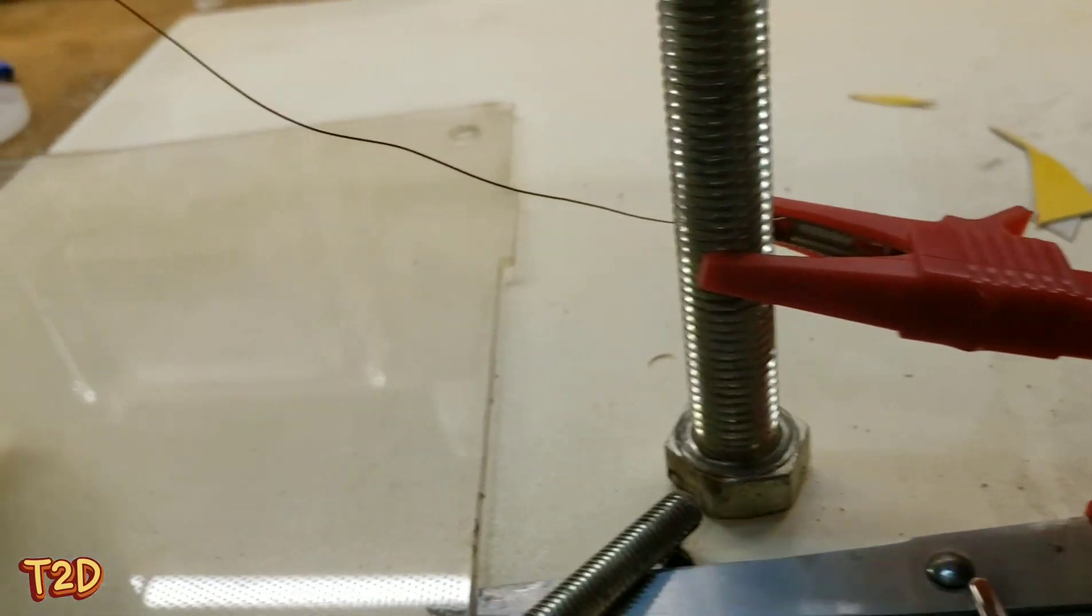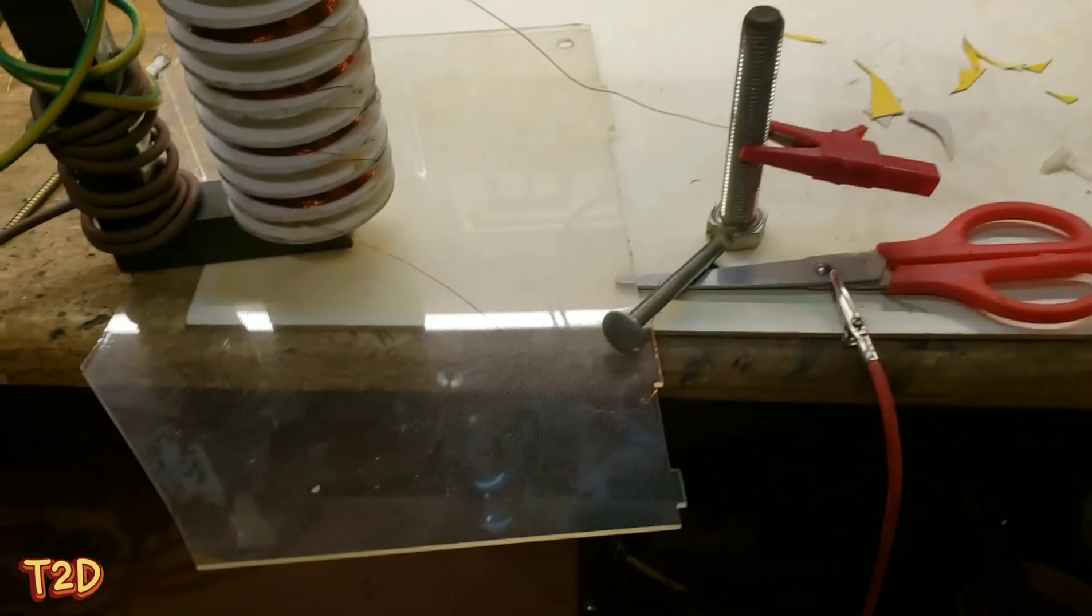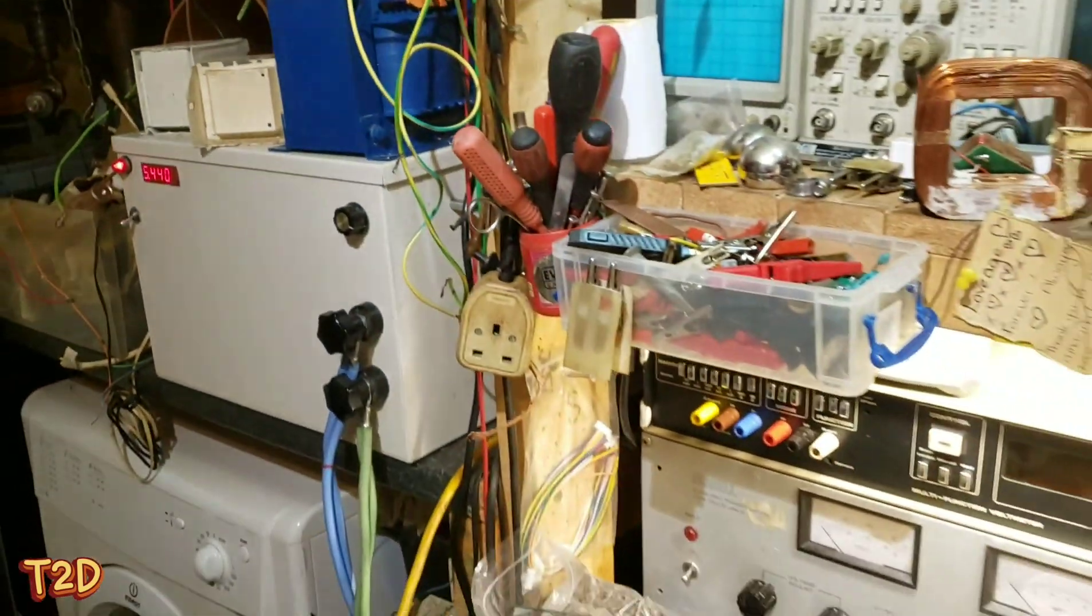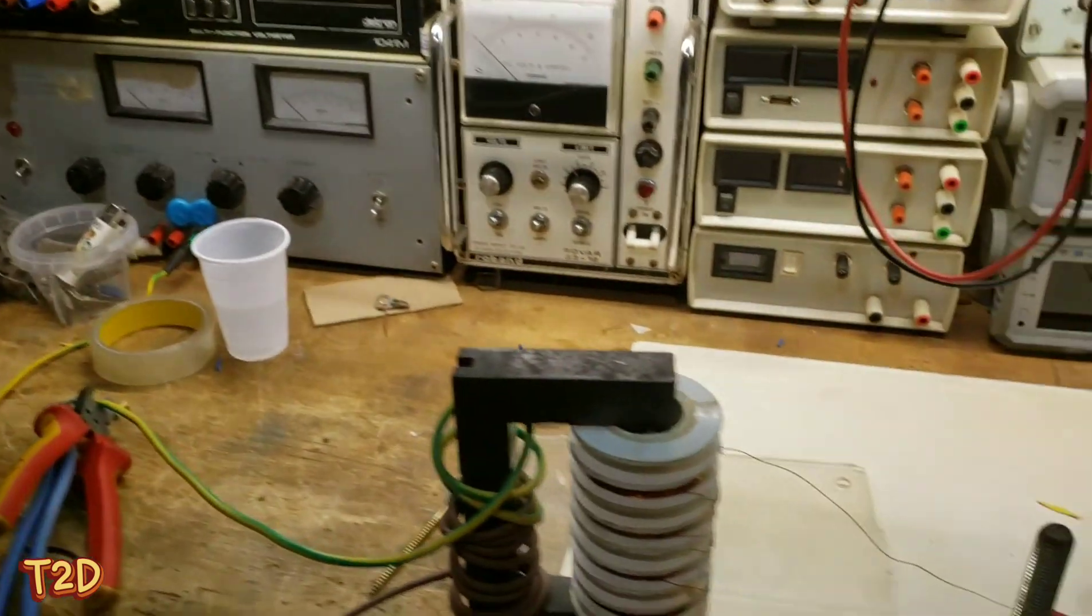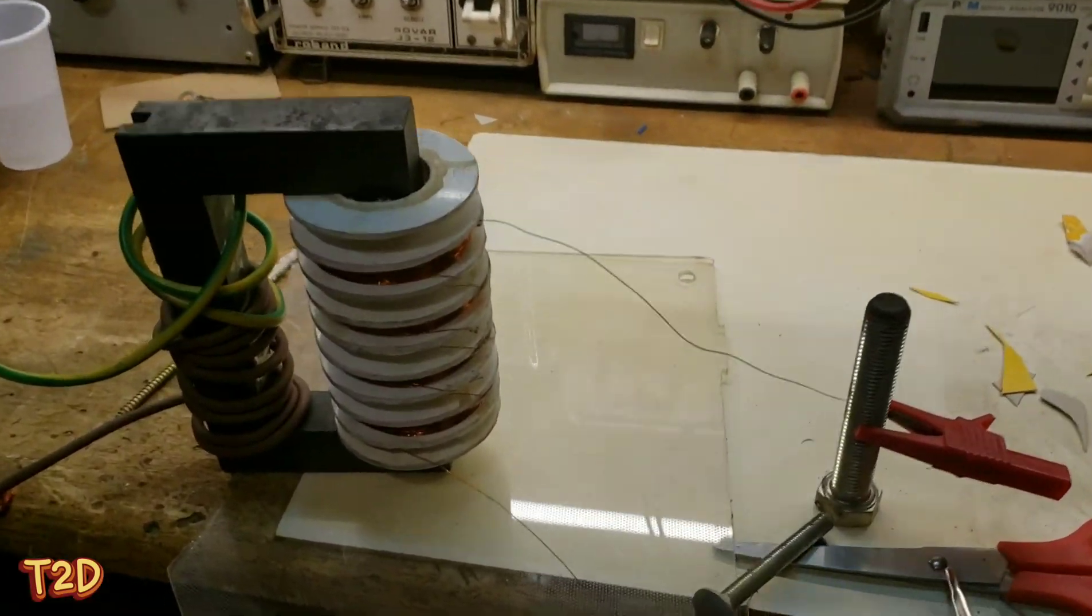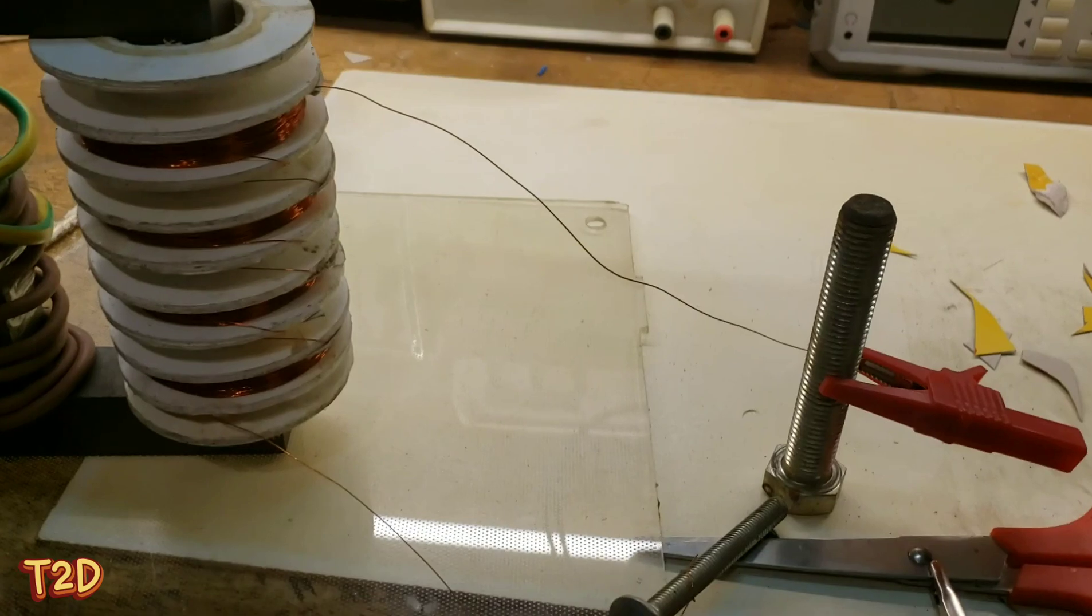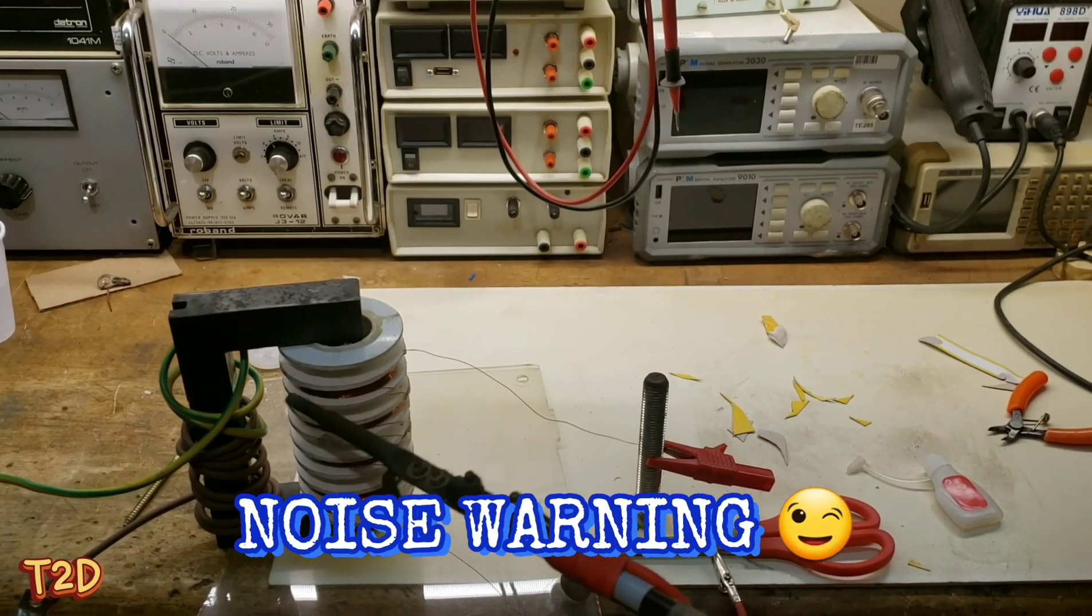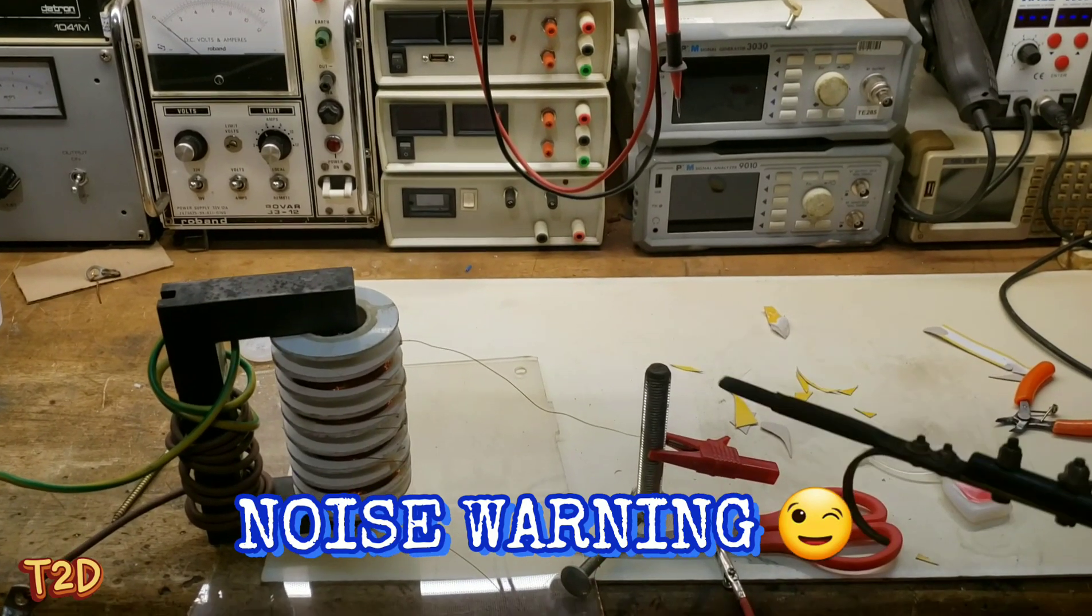We've just got a random frequency on there, 5.4 kHz from something I was running earlier. So we'll just test at that. We're not interested really on tuning this at the moment. We just want to see some output. We've just got a random amount of turns on this primary just for testing. So here we go.